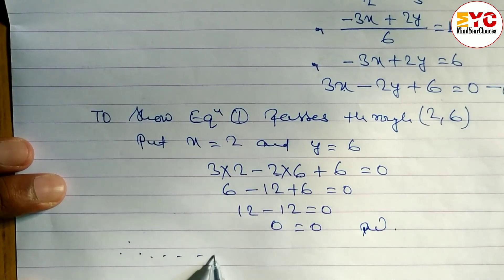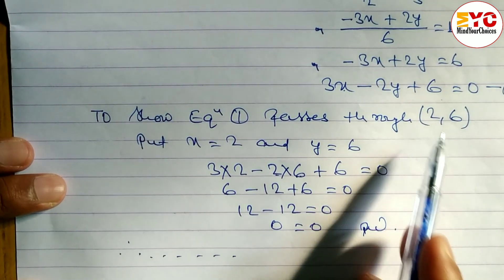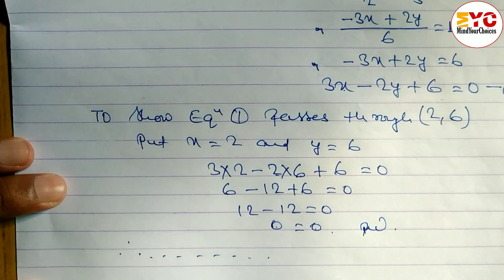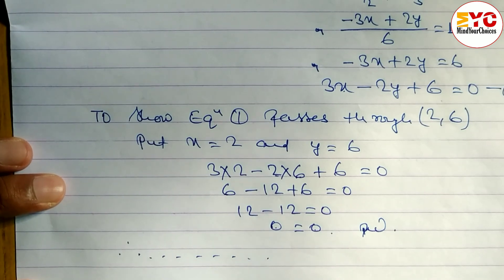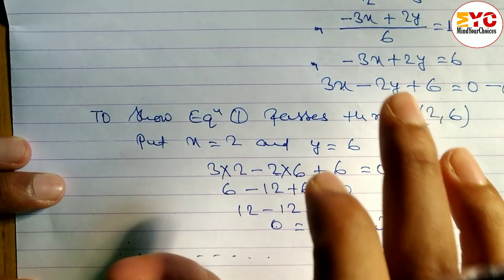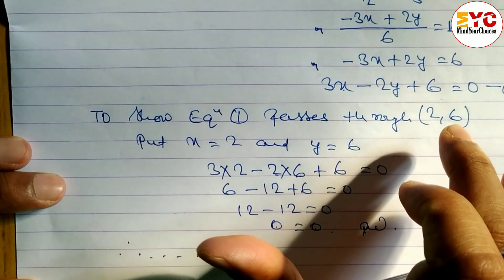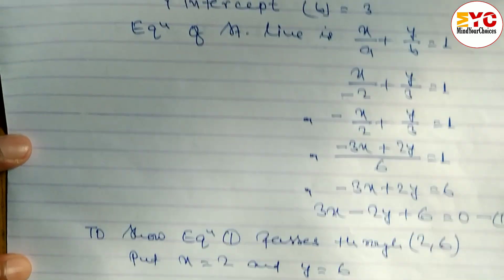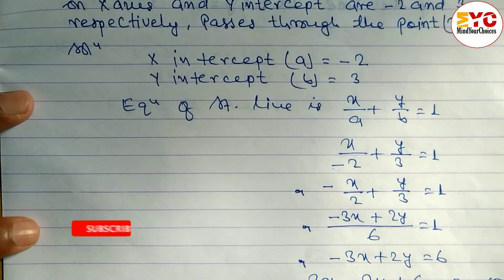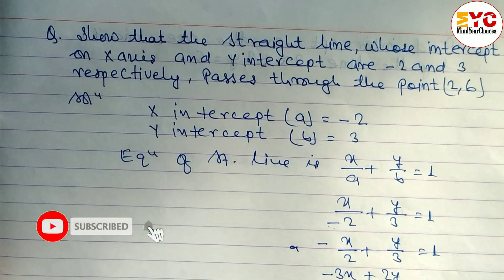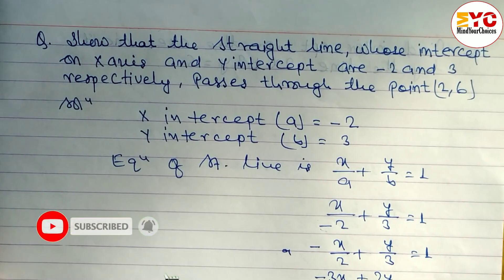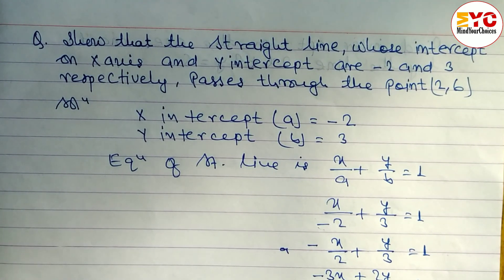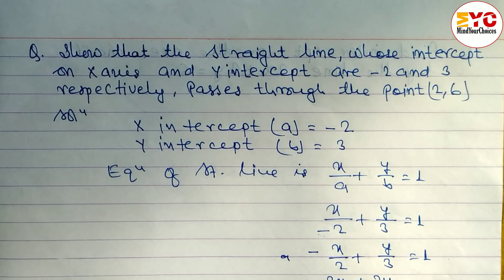Since both sides are equal, therefore the equation is passing through the point (2, 6). If both sides were not equal, the required equation would not pass through that point. Hope you understood this video. If you did, please leave a like, subscribe if you're new, and hit the bell button for notifications. Thanks for watching!